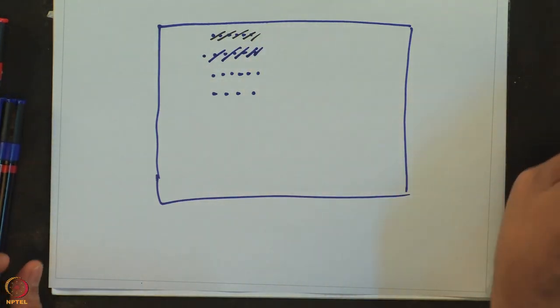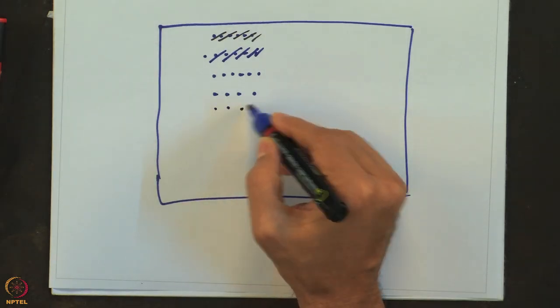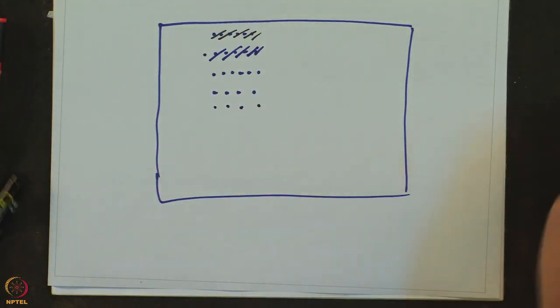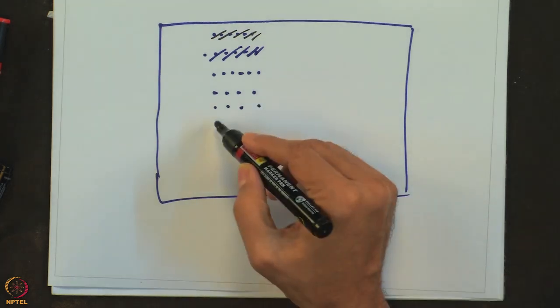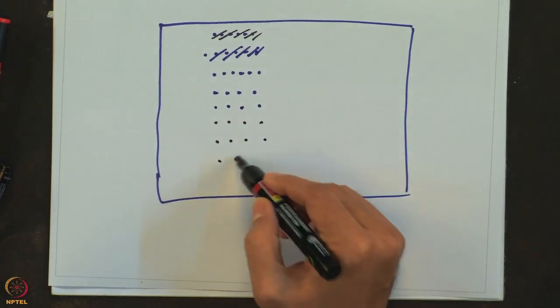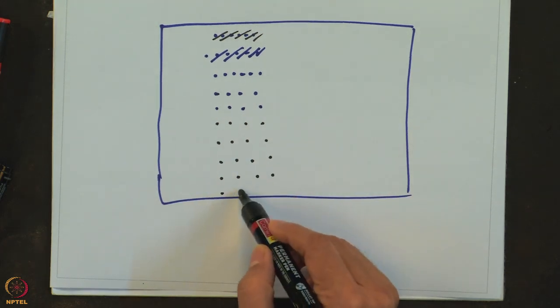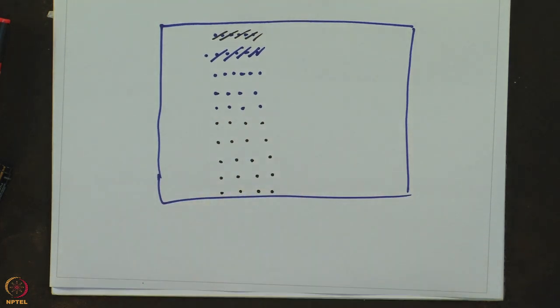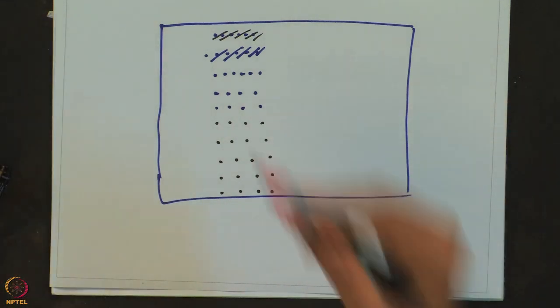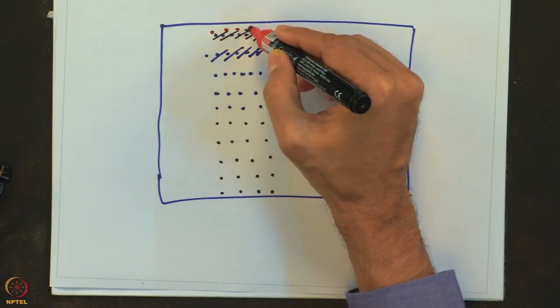But suppose a new driver comes, so then I will put down the driver information over here. Here, here, here, all the way till this point. What happens if I come down all the way and a new driver comes? Well in that case, I may start from the top. The new driver information would be put at the top.